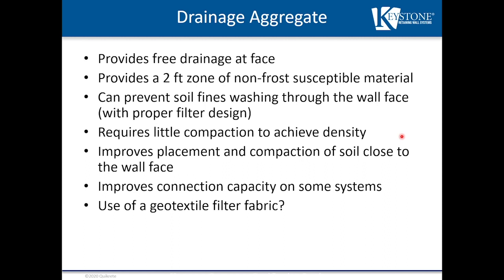We utilize clean crushed stone — typically a #67 or #57 stone — because it requires little compaction to achieve density, improves the placement and compaction of soil close to the face, and in some systems improves connection capacity. Regarding geotextile filter fabric: in many cases it's not necessarily required, but in certain water applications you should use a geotextile to prevent fines from washing into the drainage system.